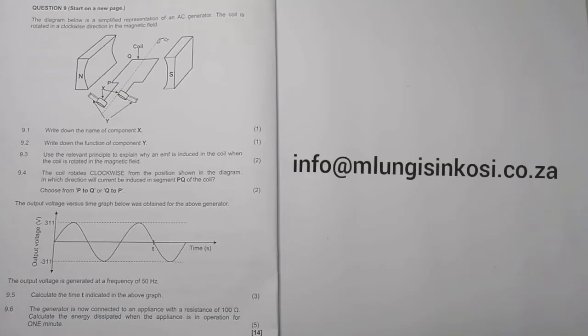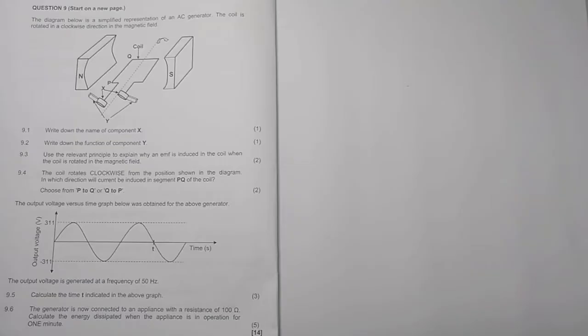Now let's have a look at this question. It's on electrodynamics - motors and generators. In the diagram below is a simplified representation of an AC generator. The coil is rotated in a clockwise direction in the magnetic field. First of all, write down the name of component X. You can see our component X there - those are our slip rings.